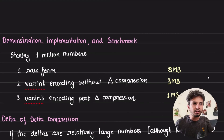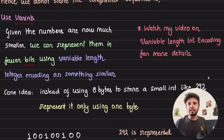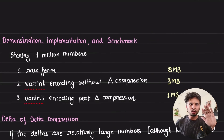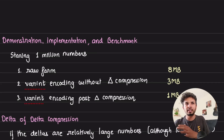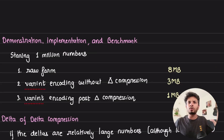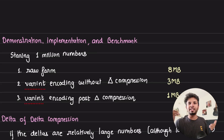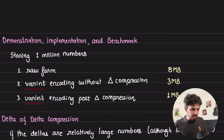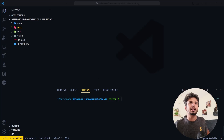Now that we know we can save space using variable-length integer encoding, what if we store the delta-encoded stream using variable-length integer encoding? We'll go through code to demonstrate the storage savings. Storing 1 million raw 64-bit numbers takes 8 MB. Applying variable-length integer encoding alone reduces it to 3 MB. Applying delta encoding plus variable-length integer encoding reduces it further to just 1 MB — going directly from 8 MB to 1 MB.